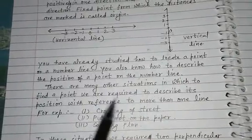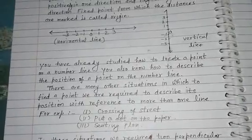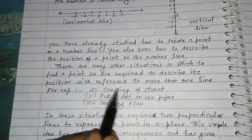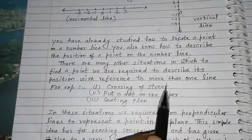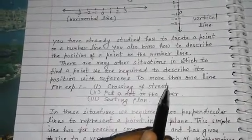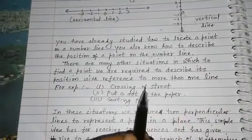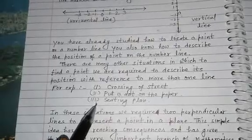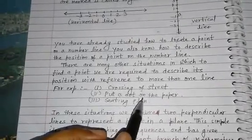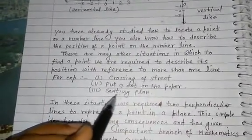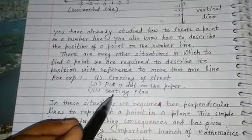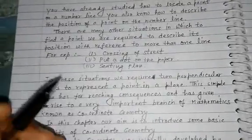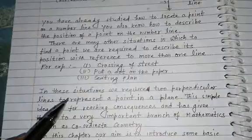We require two lines. For example, consider a sitting plan — when we make a seating arrangement, we refer to rows and columns. Row and column means we require two perpendicular lines. So in these situations, we require two perpendicular lines to represent a point in a plane.